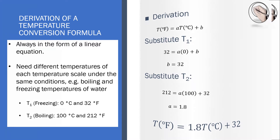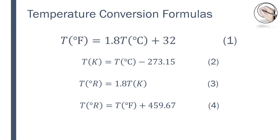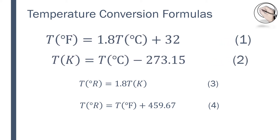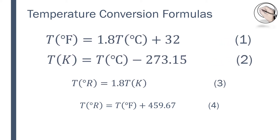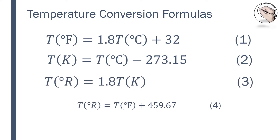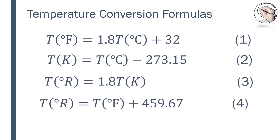These are the four temperature conversion formulas you can use to move from centigrade to Fahrenheit, centigrade to Kelvin, Kelvin to Rankine, and Fahrenheit to Rankine, or vice versa.